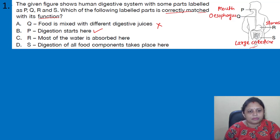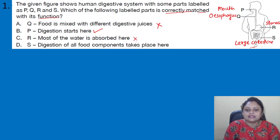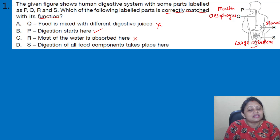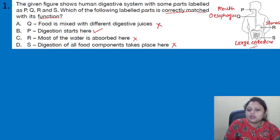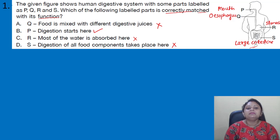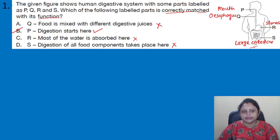In option C: R — most of the water is absorbed here. R is the stomach, and no, water is not absorbed in the stomach — digestion takes place there. Most of the water is absorbed in the large intestine. Option D: S — digestion of all food components takes place here. S is the large intestine, and no digestion takes place there; most of the water is absorbed there. So the correct answer is option B.